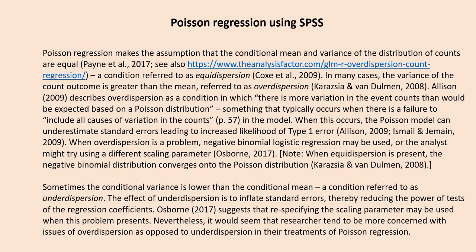Sometimes the conditional variance is lower than the conditional mean, which is a condition referred to as underdispersion. The effect of underdispersion is to inflate standard errors, thereby reducing the power of tests of the regression coefficients. Osborne suggests that re-specifying the scaling parameter can be used to address this problem as well. Nevertheless, researchers tend to be more concerned with issues of overdispersion as opposed to underdispersion in their treatments of Poisson regression.